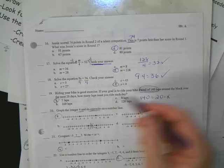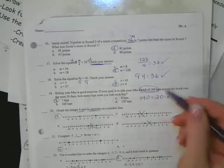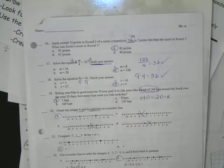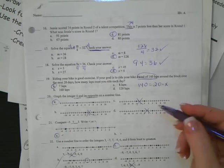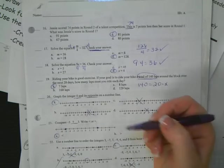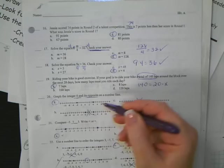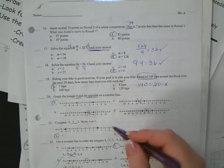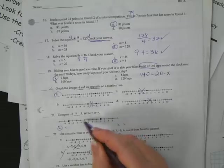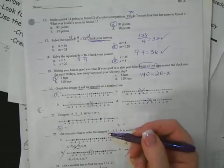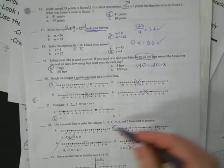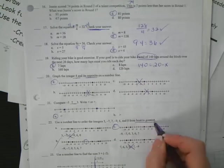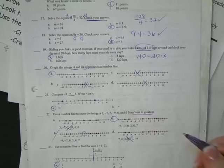Alright, number 23, use the number line to find the sum, 3 plus a negative 2. If you'll notice on this number line, we start at 0. The first step we do is go to the positive 3, and from there, we're going to add a negative 2. So we go in the negative direction. We're going to find the difference of those two. They're going to go in opposite directions, so we find the difference of them. We can't add them. So the difference is 1, and then we're still not past 0, so it's a positive 1. So that's your answer for that one.